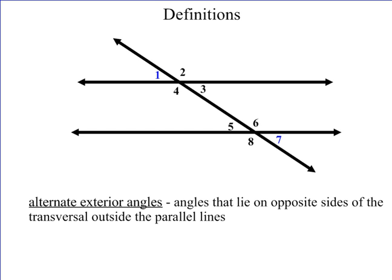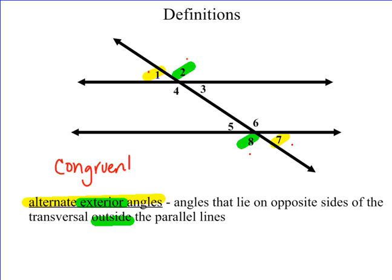Now we have alternate exterior angles. Alternate exterior angles are angles that lie on opposite sides of the transversal, outside of the parallel lines. Exterior means outside. When we look at the outside of the parallel lines, we have angles one, two, seven, and eight. Angle one alternates with angle seven on the opposite side of the transversal, and the same is true for angle two and angle eight. These are also congruent — equal measure angles.